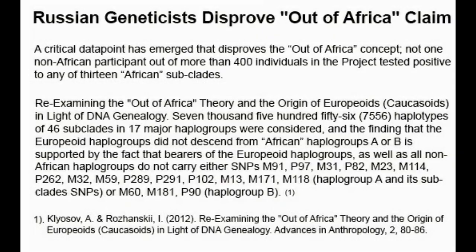Within that, there are smaller sub-theories, such as recent Out of Africa, which focuses specifically on the modern human story and how we ended up throughout Eurasia, America, Australia, etc. That more recent date is right around 55,000 to 60,000 years ago — that's what we're focusing on here.